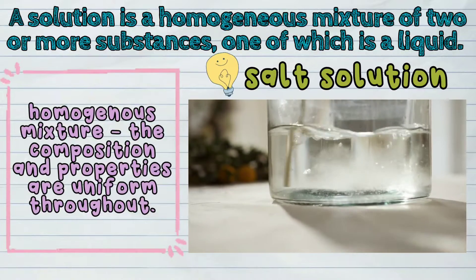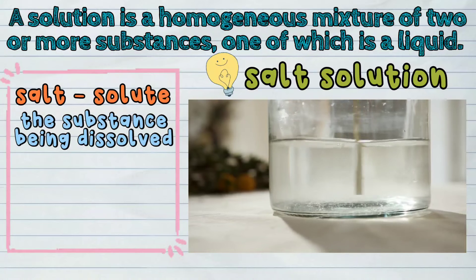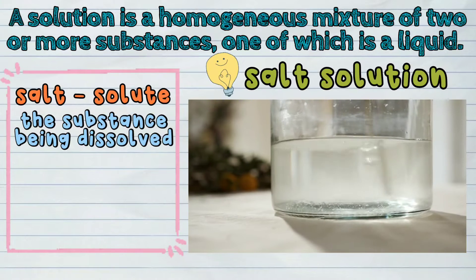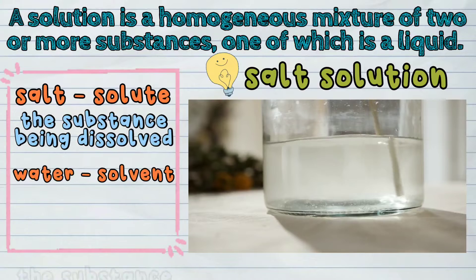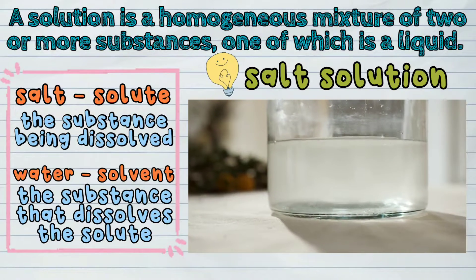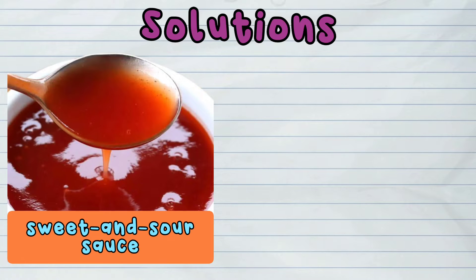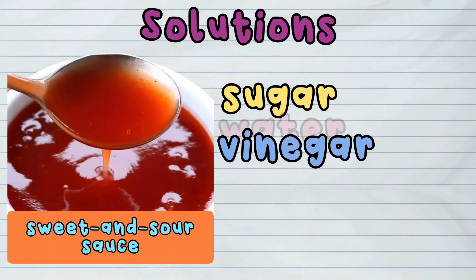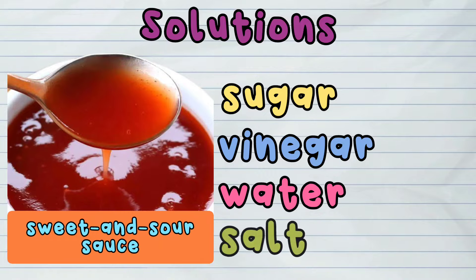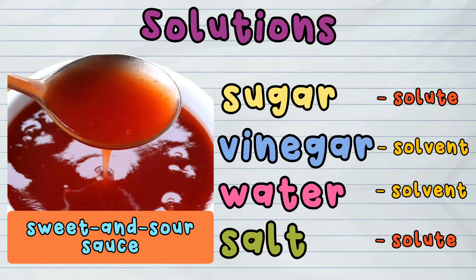In a salt solution, salt is the solute, or the substance being dissolved, while water is the solvent, or the substance that dissolves the solute. Other examples of solutions can be found at home. Sweet and sour sauce is a mixture of sugar, vinegar, water, and salt. Sugar and salt are the solutes, while vinegar and water are the solvents.